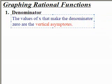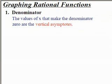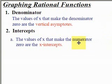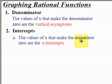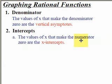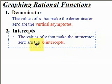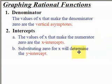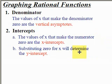The next thing I'm going to look at is the intercepts. I need to determine both the x and the y-intercepts. For the x-intercepts, I look at the numerator — the values of x that make the numerator zero give me the x-intercepts. And evaluating the function when x is zero, like every function, helps me determine the y-intercept.